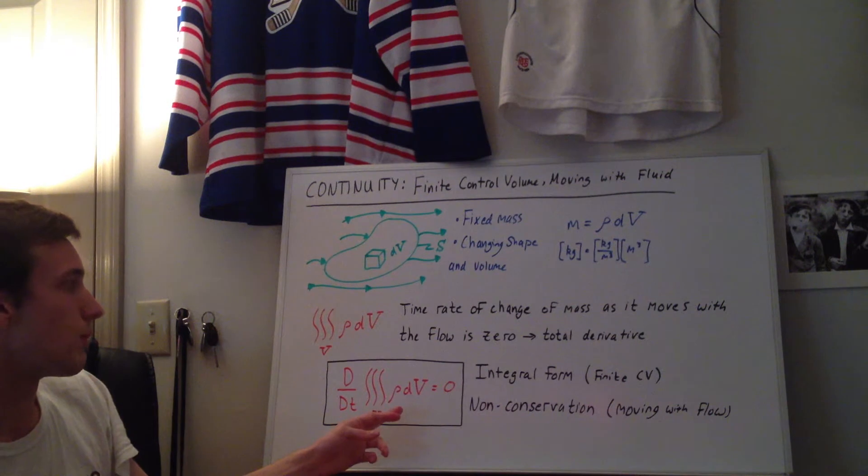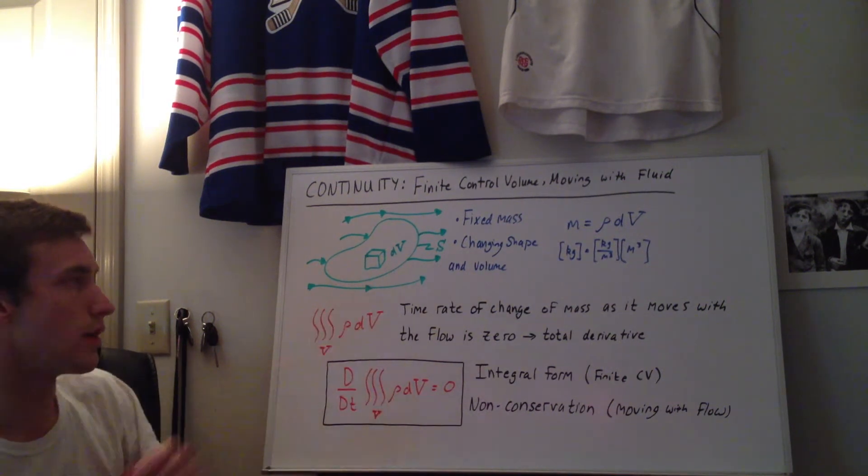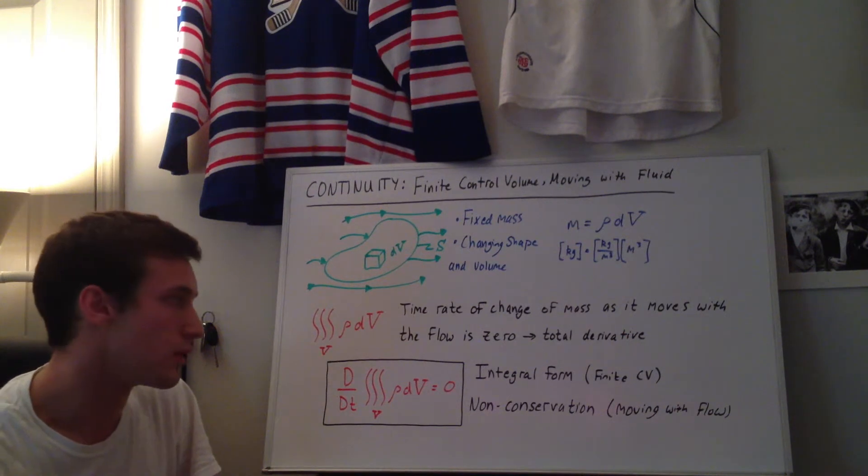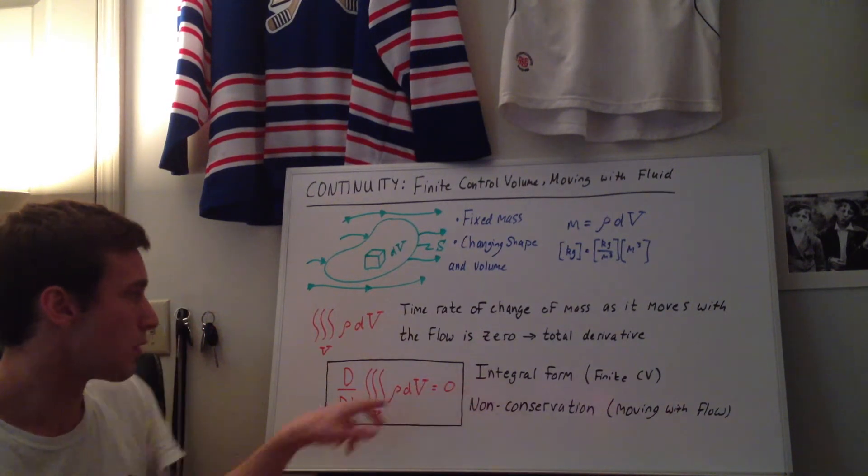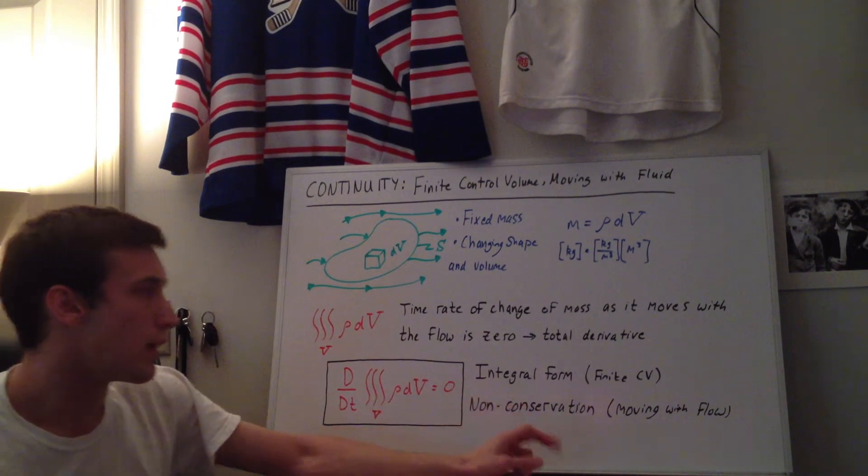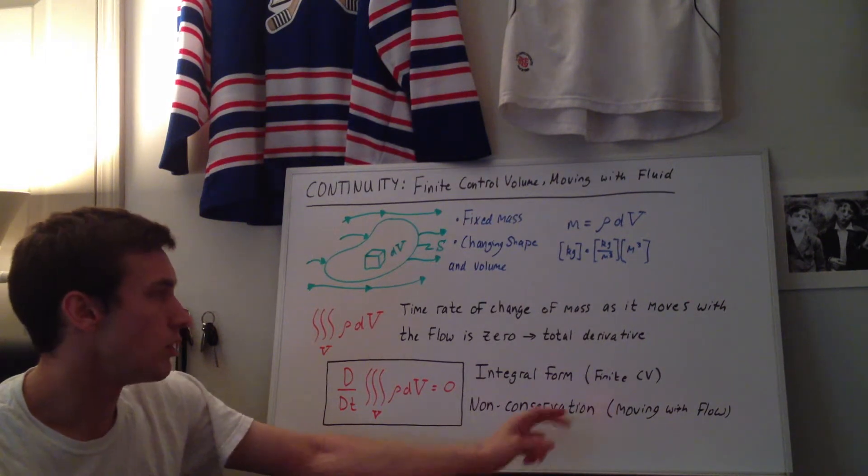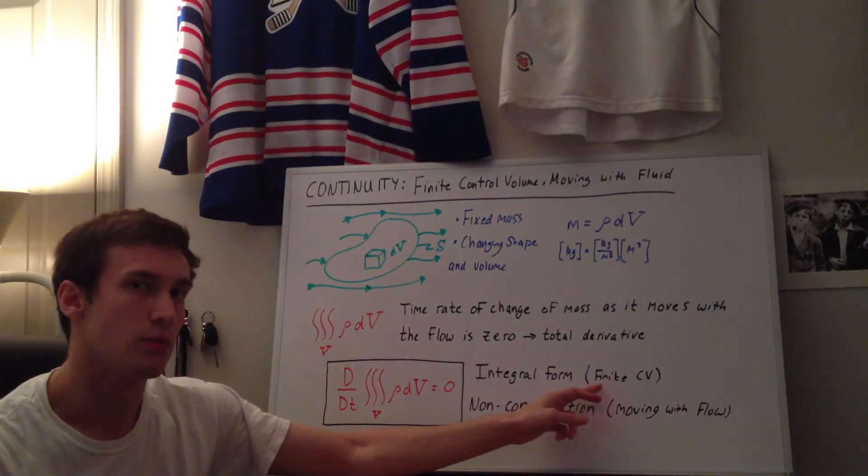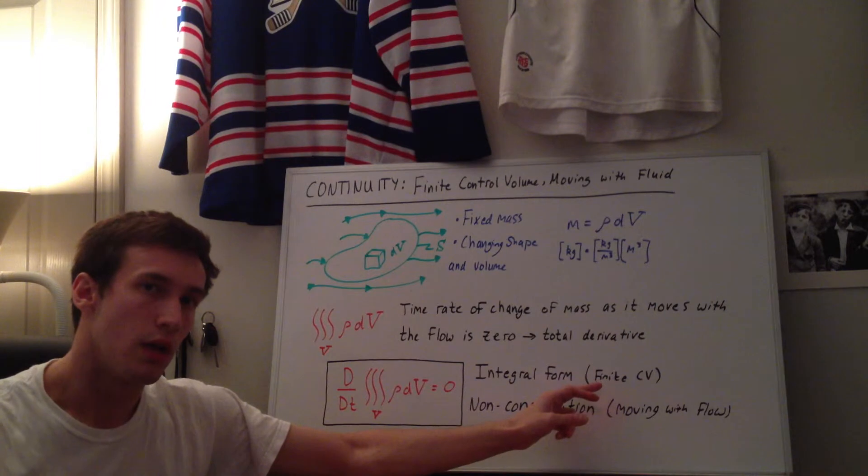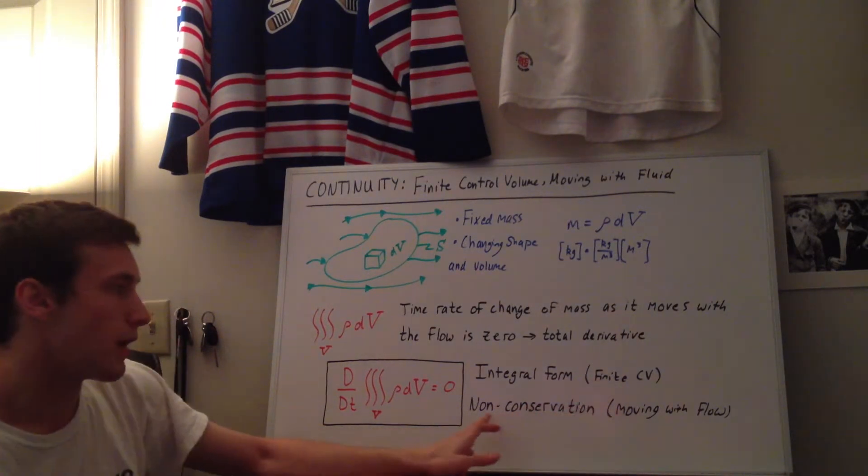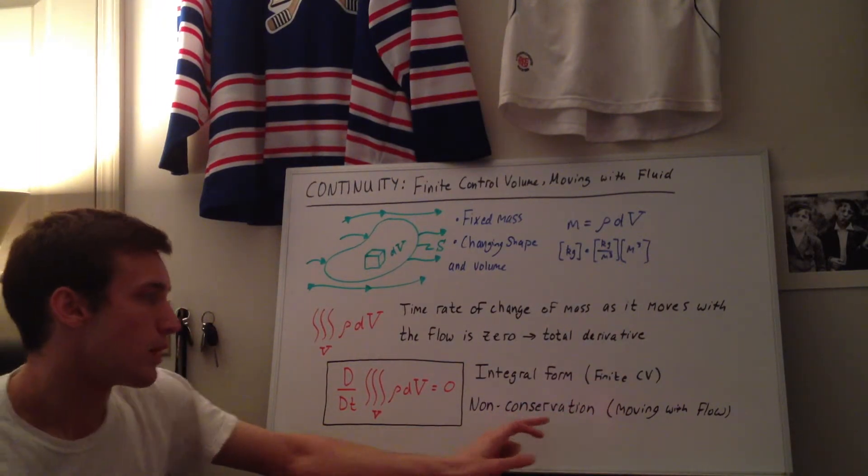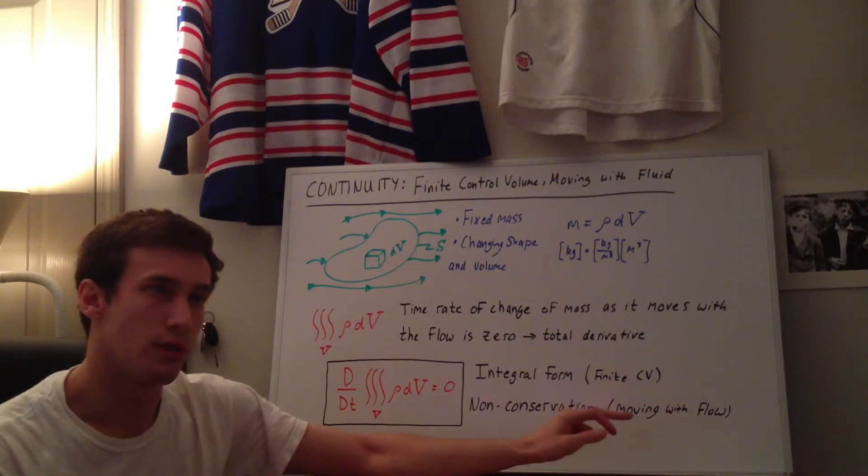And that's the final form for integral form using the finite control volume moving with the fluid definition of the flow. So we get it in integral form, you can see because there's integrals here. And that's because we use the finite control volume definition as opposed to the infinitesimally small fluid element. And we get non-conservation form because we're moving with the flow as opposed to being fixed in space.